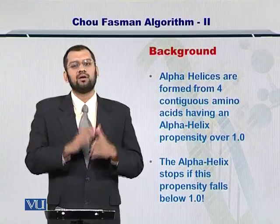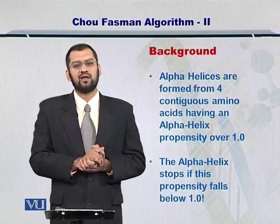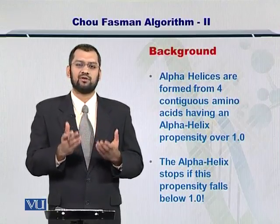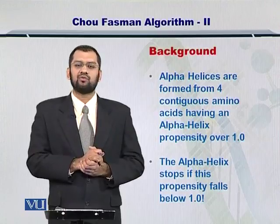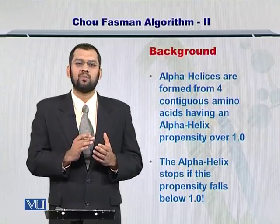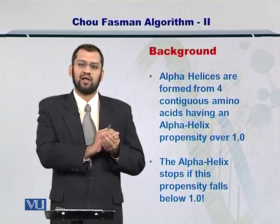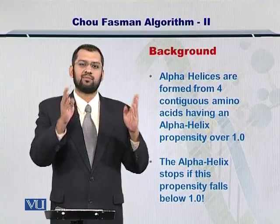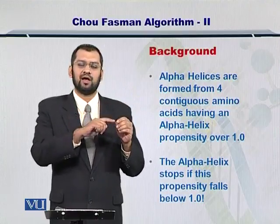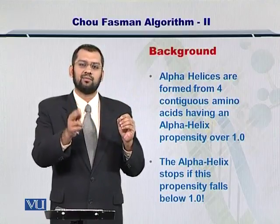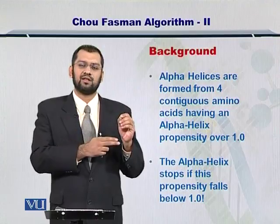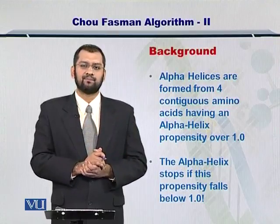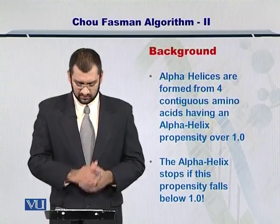However, besides the alpha helices there are beta sheets, turns, loops, and coils as well. So how do we go about transitioning from alpha helices to beta sheets? In a bigger protein, alpha helices can be connected to beta sheets or loops. Let's address that in this module.